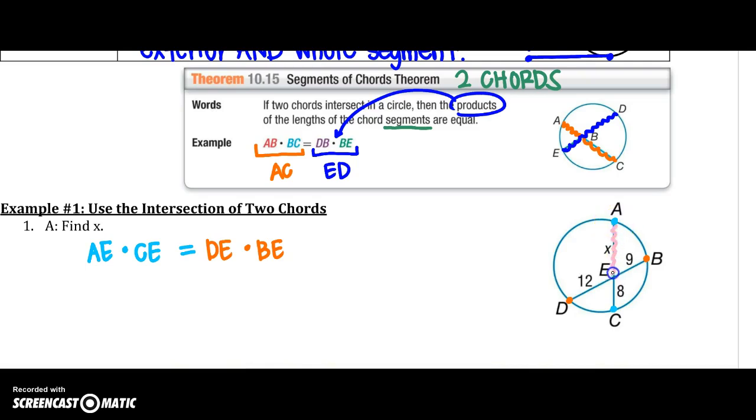So filling in the blank, AE, X, times 8, equals DE, 12, times 9. Right, so I get 8X over here, equals 108. When I divide both sides by 8, X is going to equal 13.5.